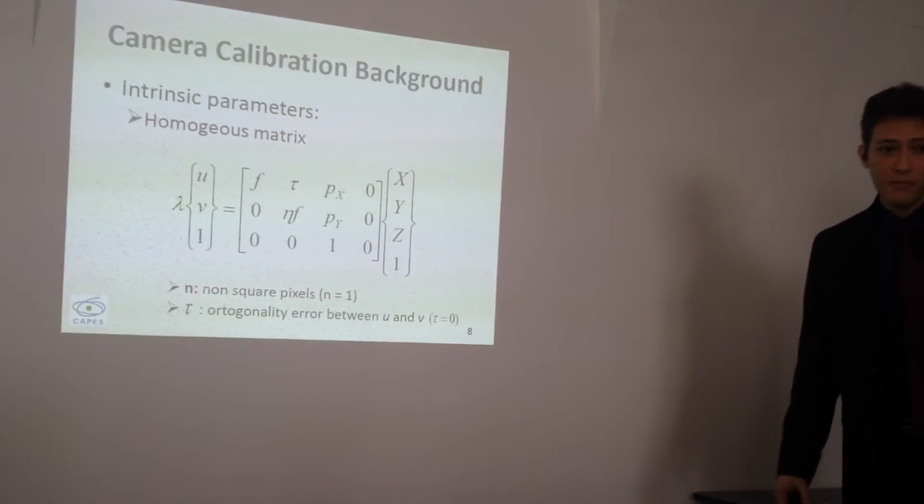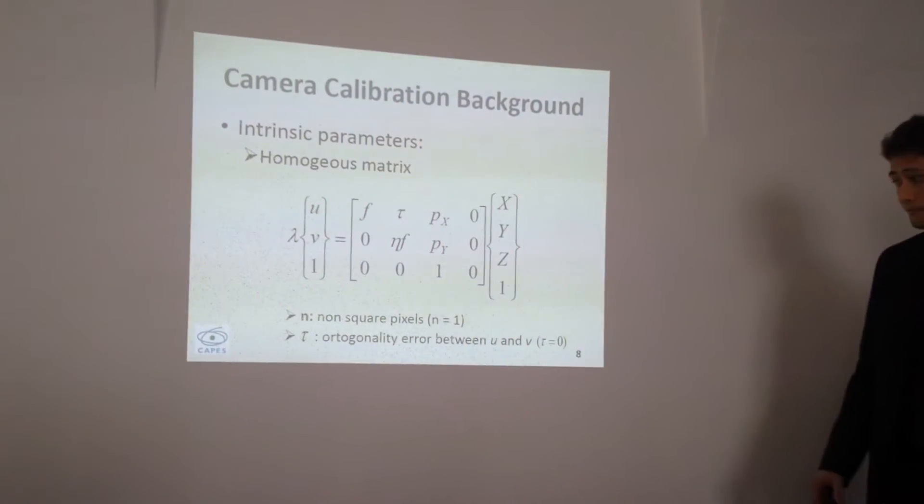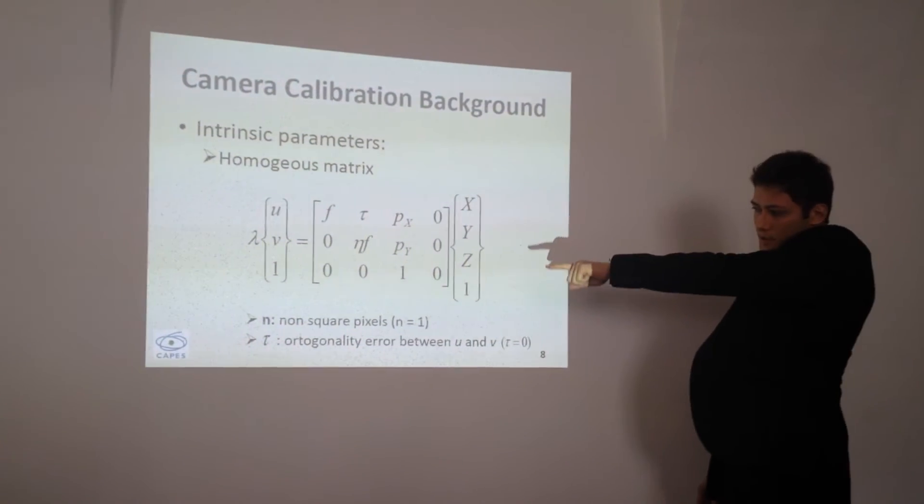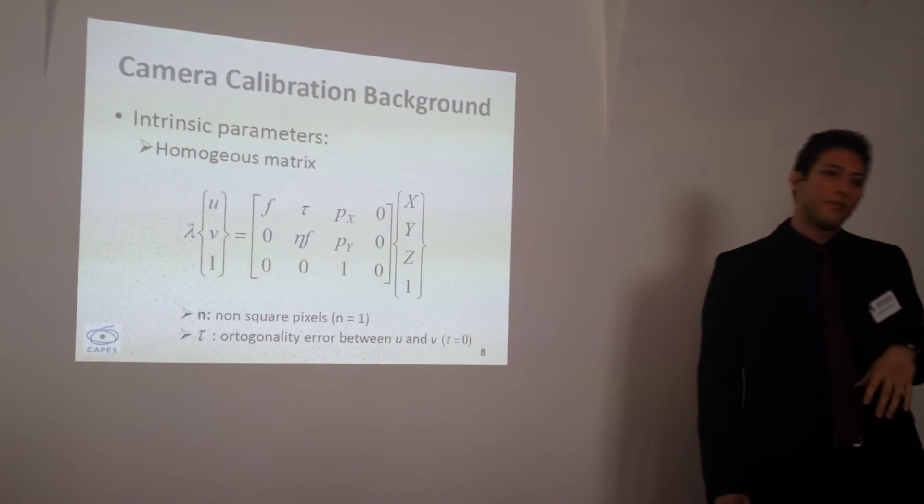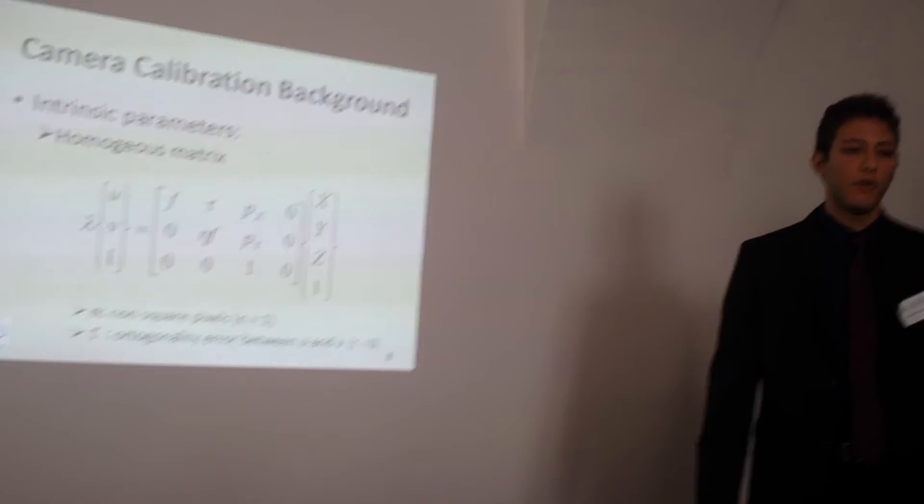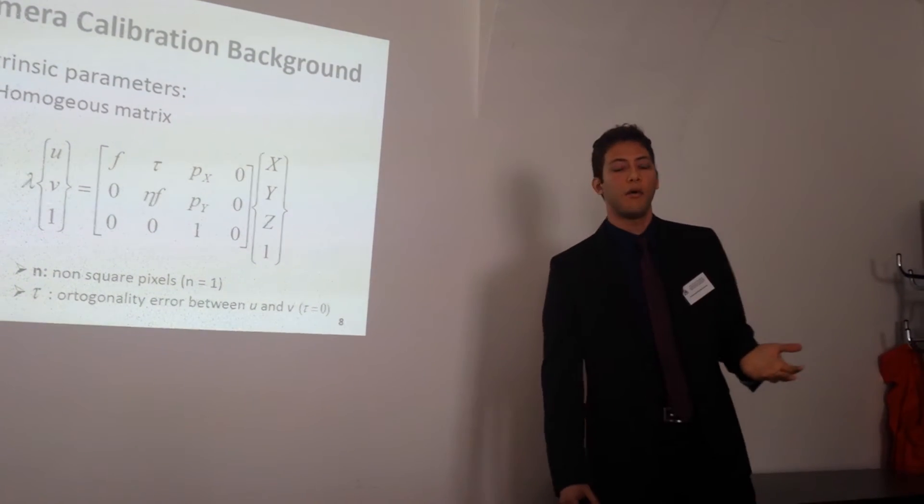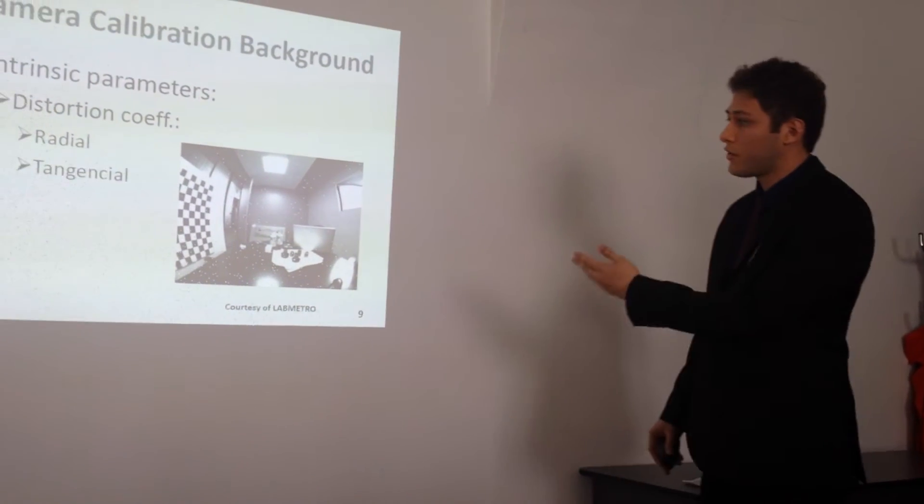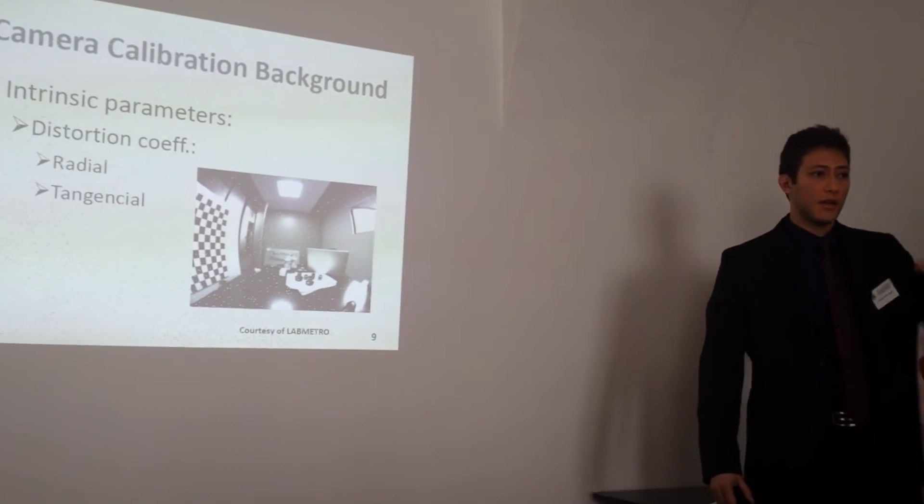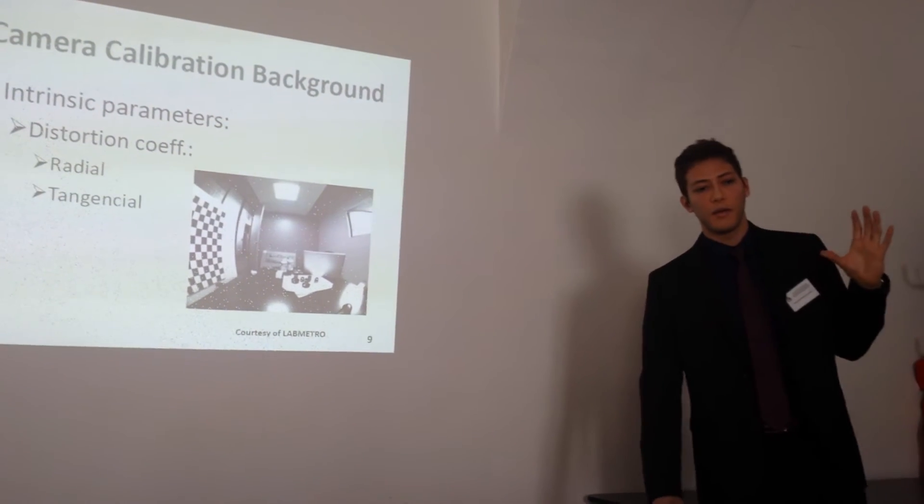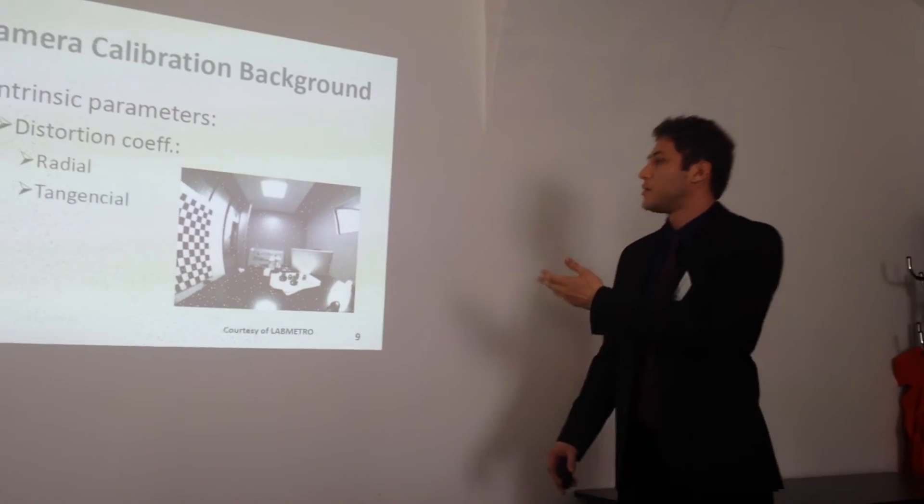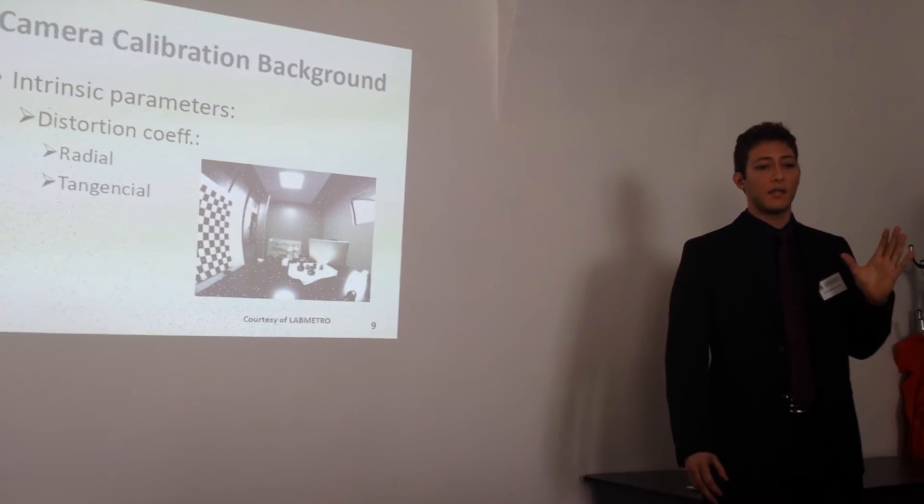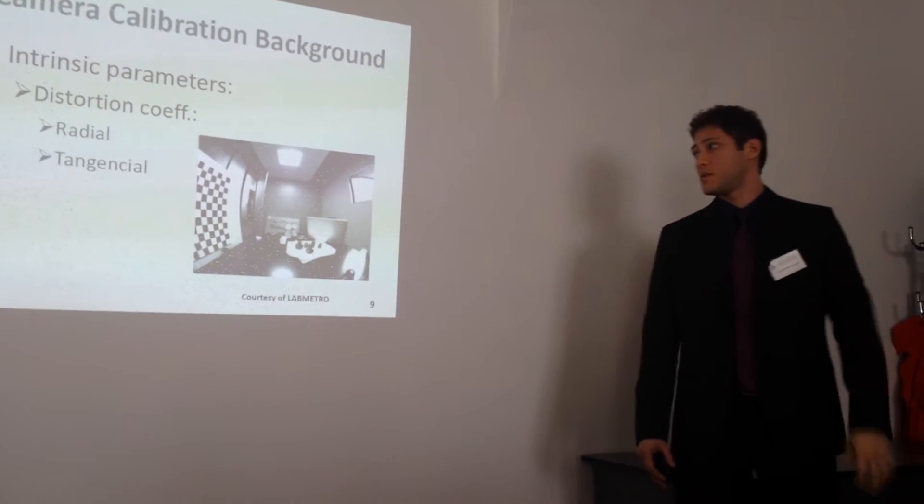The intrinsic parameters can be modeled by this homogeneous matrix. These coefficients, n and tau, you can use as 1 and 0 because modern cameras don't affect the results. Here you can see an example of radial distortion. By using camera calibration you can correct the image, and this is very useful.